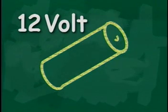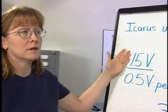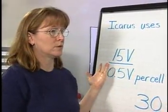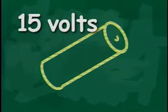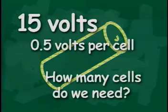The Icarus satellite uses 12-volt batteries. Voltage is a measurement of electricity, and if we use a solar array to charge our batteries, we know from science that we need the solar array voltage to be slightly higher than the 12-volt batteries — so let's say 15 volts. To calculate the number of solar cells we need for the array, we use algebra. Since each Icarus solar cell provides 0.5, or half a volt of charge, how many cells do we need for our solar array to produce the 15 volts?